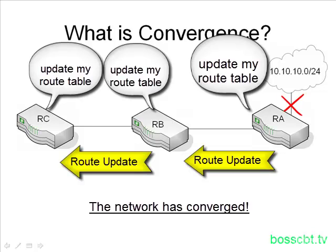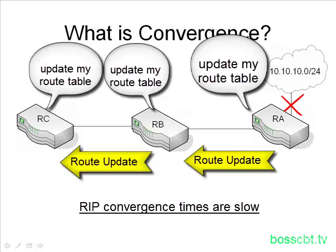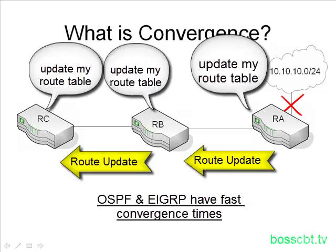Each routing protocol addresses network changes differently, so the convergence speed between different routing protocols likewise varies greatly. RIP is considered to be very slow in convergence, as opposed to routing protocols like OSPF and EIGRP, which are both considered to be very fast when it comes to convergence.